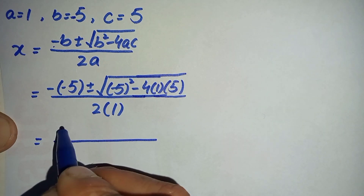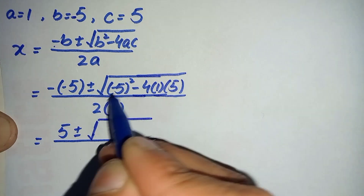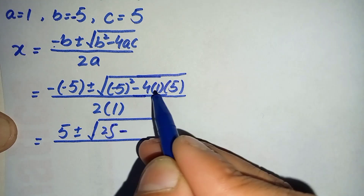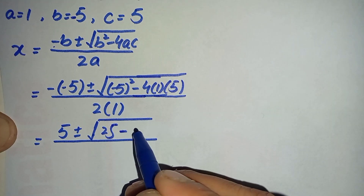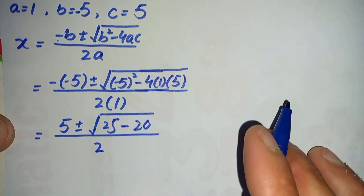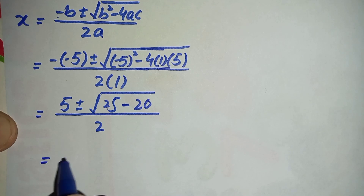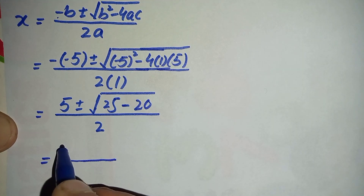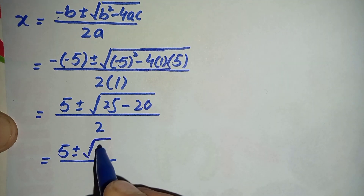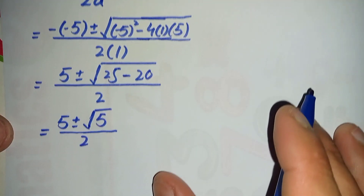It will become: 5 plus or minus the square root of (minus 5) squared minus 4 times 1 times 5, divided by 2 times 1. That gives 5 plus or minus the square root of 25 minus 20, divided by 2. Simplifying further, we get 5 plus or minus the square root of 5, divided by 2.